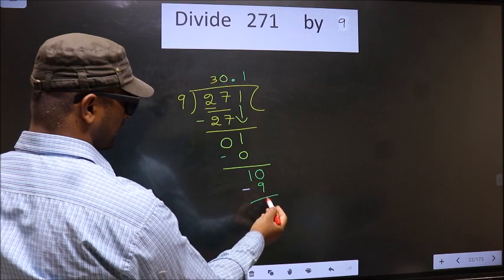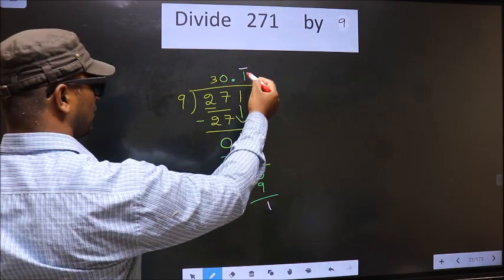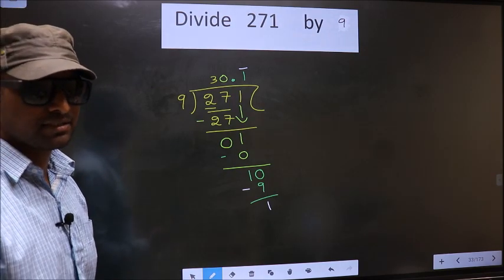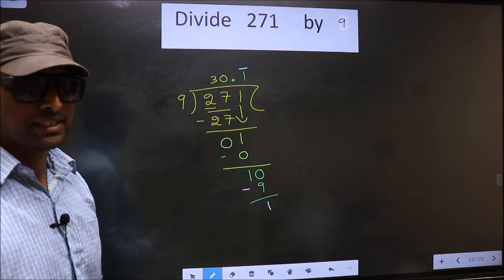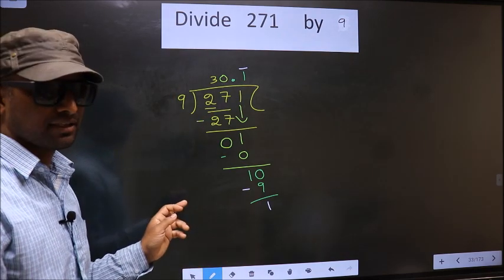Now you subtract 10 minus 9, 1. We got 1 again. That means we get bar on 1. Did you understand where mistake happens? You should not do that mistake. Am I clear?